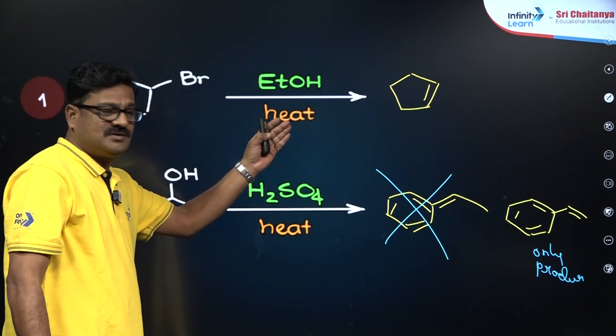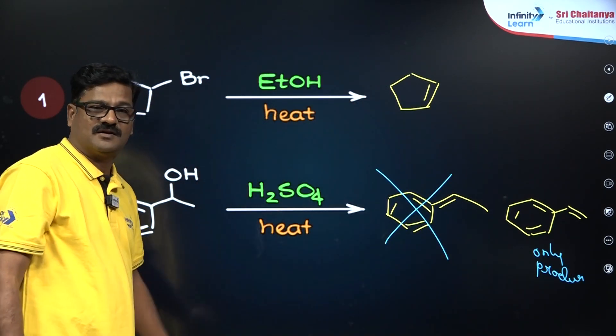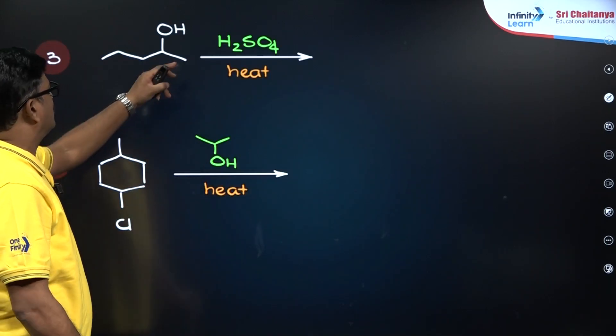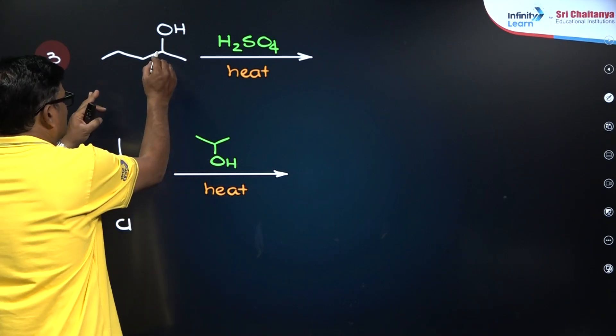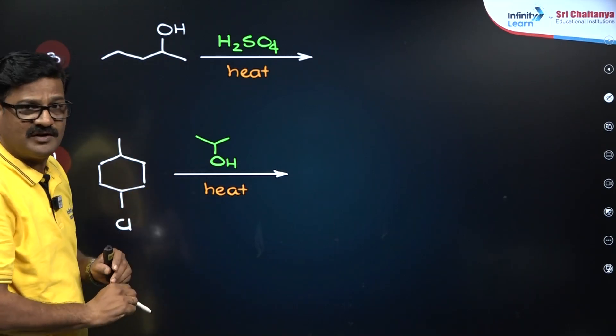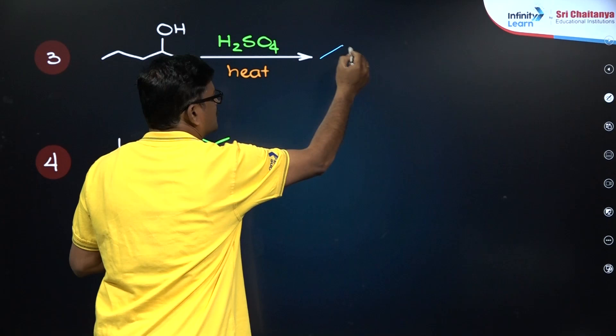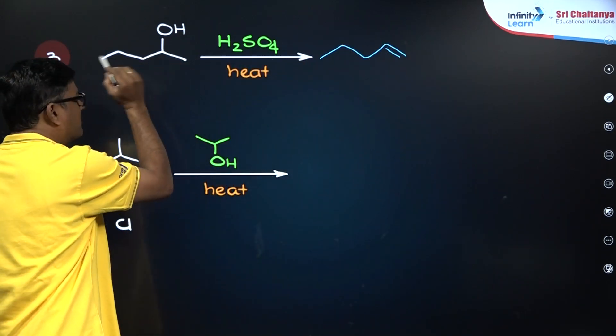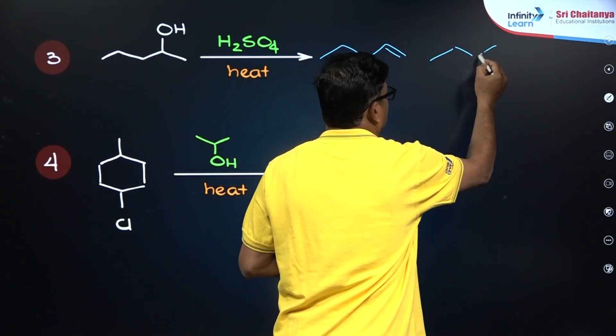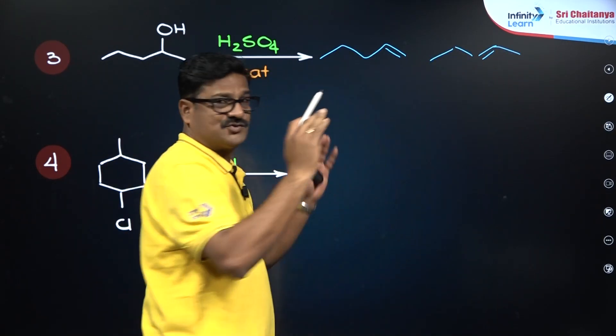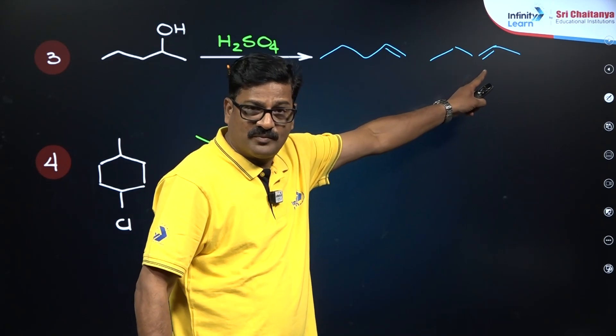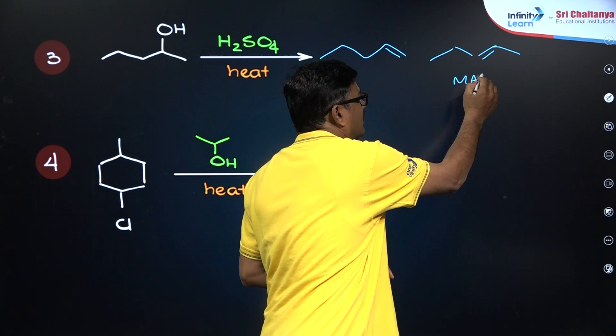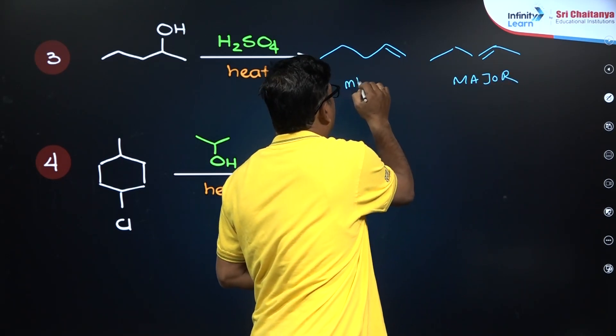This is dehydrohalogenation and this is dehydration of alcohol. Let us see one more example: this is 2-pentanol - one, two, three, four, five - and you can have removal of OH over here and you can get a double bond over here. This is one product. And you are going to get a double bond over here - you are going to get a product. In these two, according to Zaitsev rule, it is a more substituted alkene, it is going to be more stable, and this is a major product. And obviously the other one is going to be the minor product.